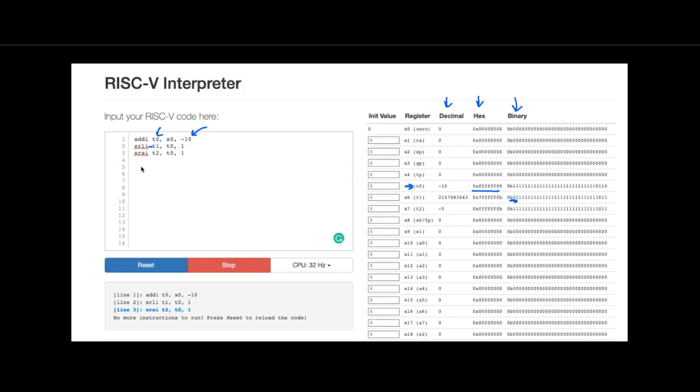However, in the shift-right arithmetic-immediate, dividing by 2, storing it into register T2, you see we get negative 5. And this is because it sign-extends. When it pushes to the right, it keeps this 1, or it adds this 1. It concerns itself.